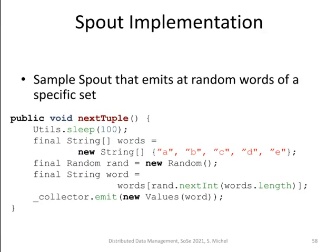Here is the implementation of a spout — a data source that emits random words from a set (A, B, C, D, E). In Storm's API, a spout implements an interface or inherits from an abstract class, and the key method to override is nextTuple. This method performs some computation and emits the tuple — in this case a random word wrapped in a Values object — similar to how MapReduce emits key-value pairs.